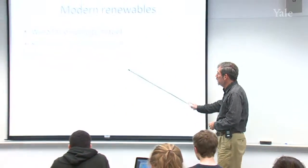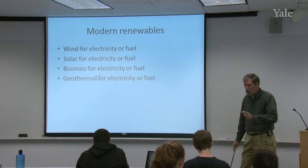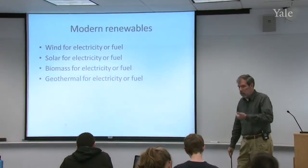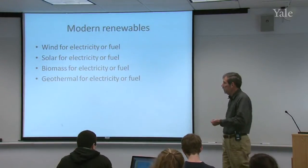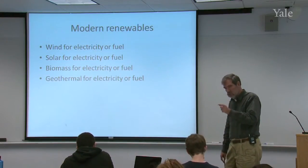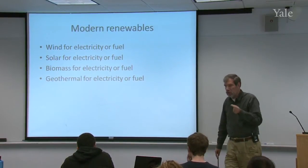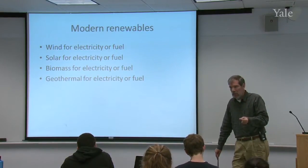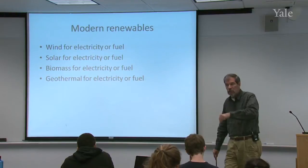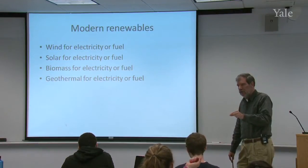In each case, I've put for electricity or fuel. Because in principle, you can generate electricity from each of these sources. But if you don't want to use it right away, you could convert it to some kind of fuel. For example, the easiest thing to do in all these cases would be to dissociate water to make hydrogen and oxygen. You can do that with electricity, and then you can store the hydrogen and use it later on for fuel at any later time.